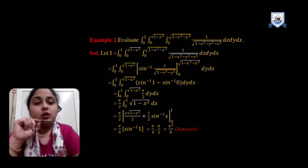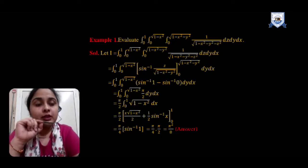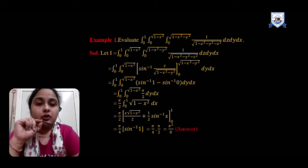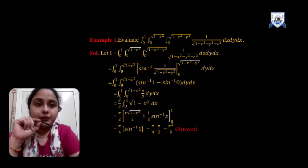Using that formula, we keep the limit 0 to 1. Putting the upper limit 1 and lower limit 0, we finally get our answer: π²/8.